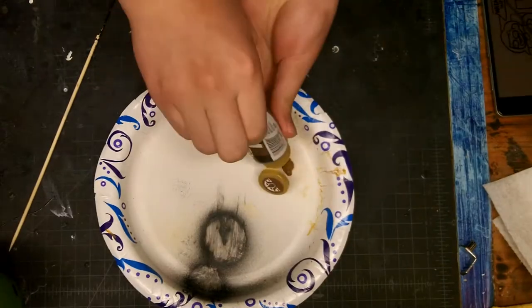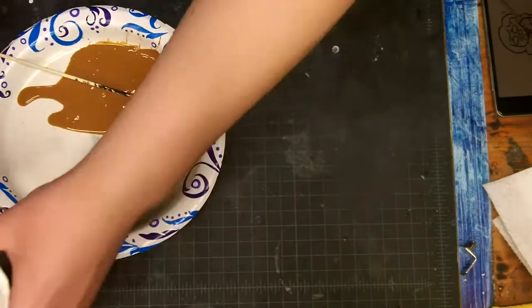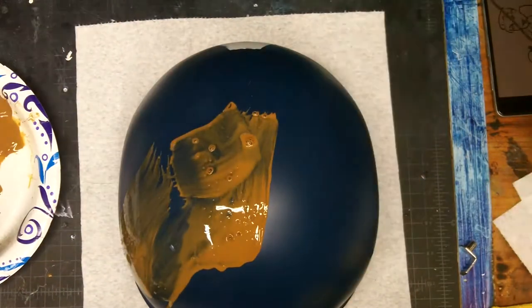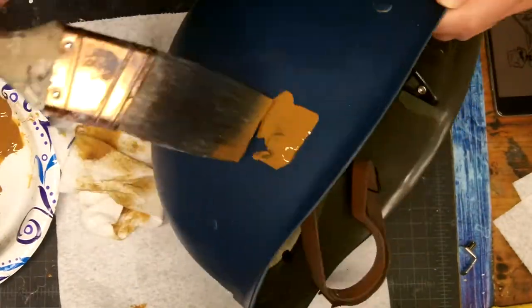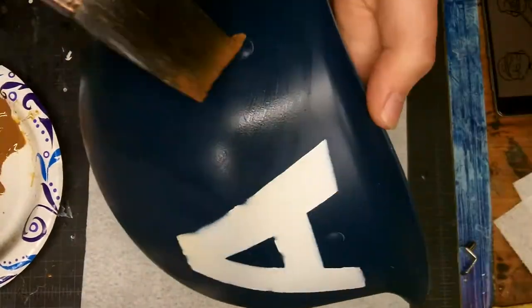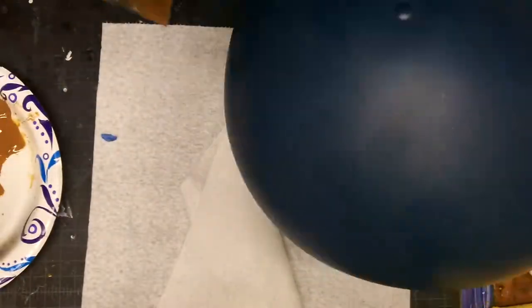And then I did some weathering, just got some brown acrylic paint that was watered down. And just to make it look dirty and like it got thrown in some mud or something. Just getting the little nooks and crannies. Make it look used.